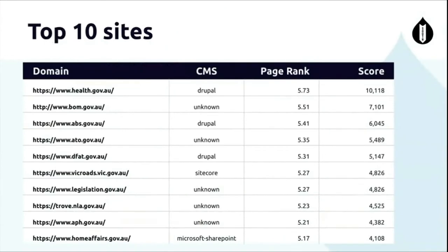Top ten sites for those that like stats: Health.gov came out at number one, then BOM - the Bureau of Meteorology - ABS, ATO, DFAT, etc. You can see the PageRank there. The score is the translation to a number - so if you take 5 to the power of 5.73, you get 10,000. That's how you can compare and graph what you've just seen. Even though 5.73 just looks a little bit higher than 5.5, it's actually not.